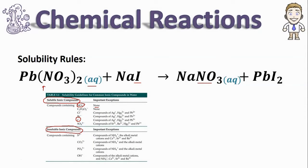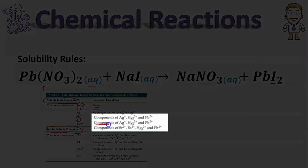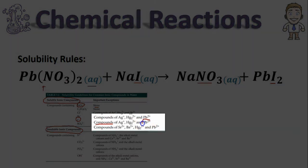In the products I've got PbI2, which also contains I minus. Except with I minus there are some listed exceptions, and Pb is one of them.